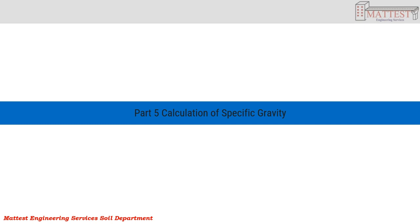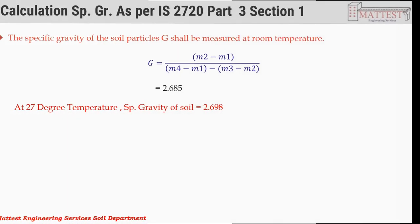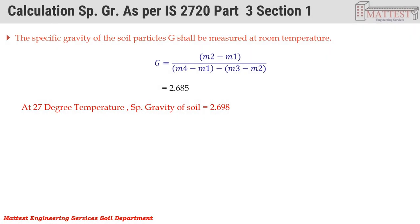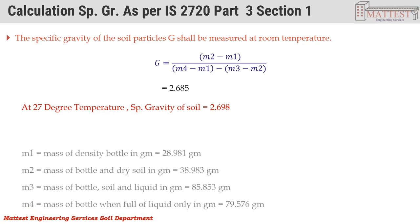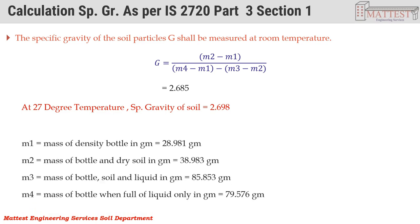Part 5 of this video is the Calculation of Specific Gravity. The calculation is performed as per IS 2720 Part 3 Section 1. The specific gravity of the soil particle is measured at room temperature, and after applying a temperature correction, the specific gravity of the soil particle at 27 degrees Celsius is determined.